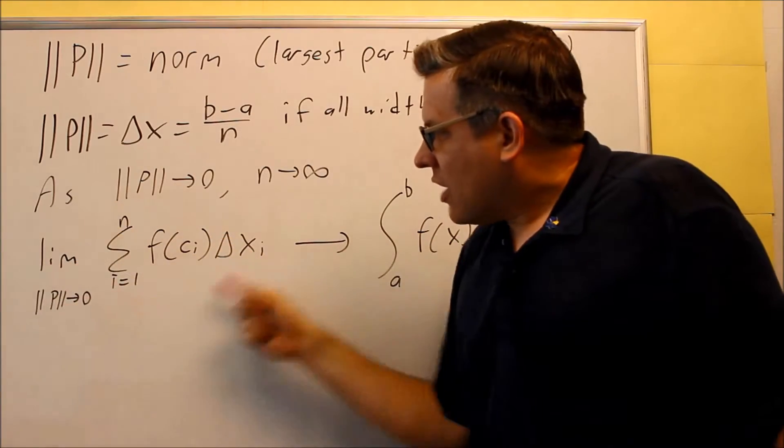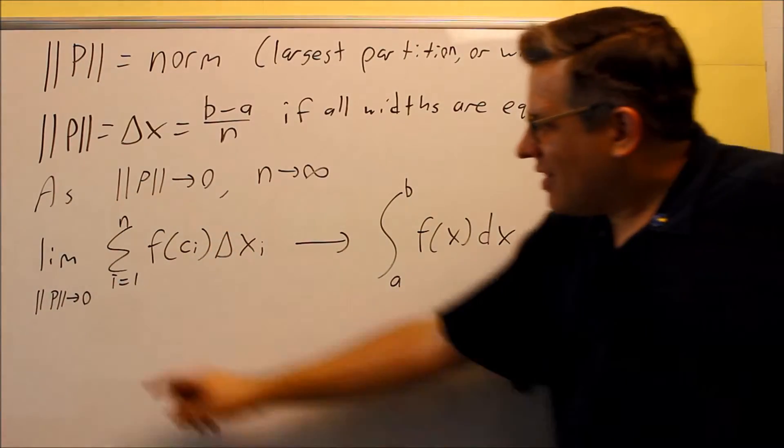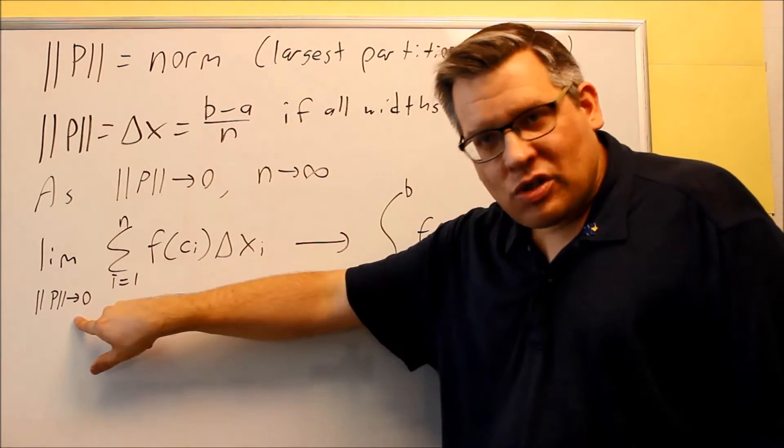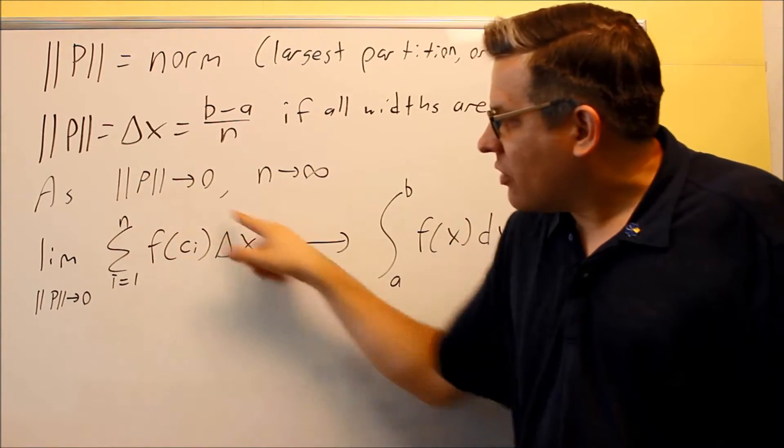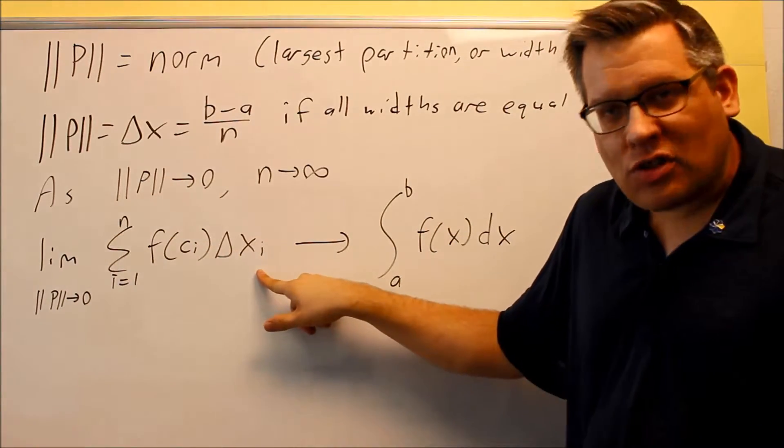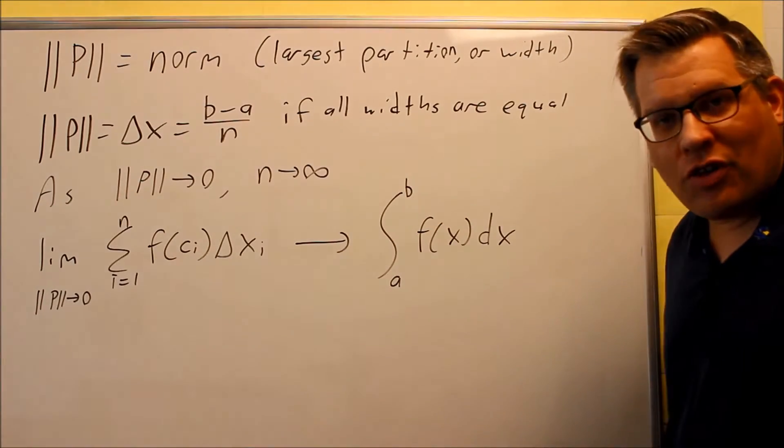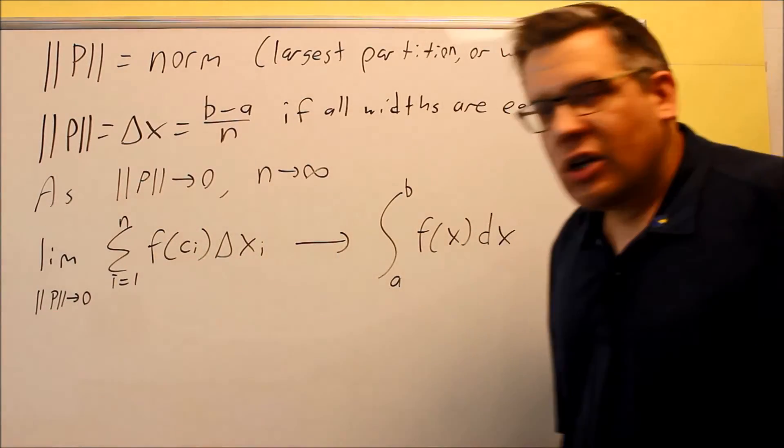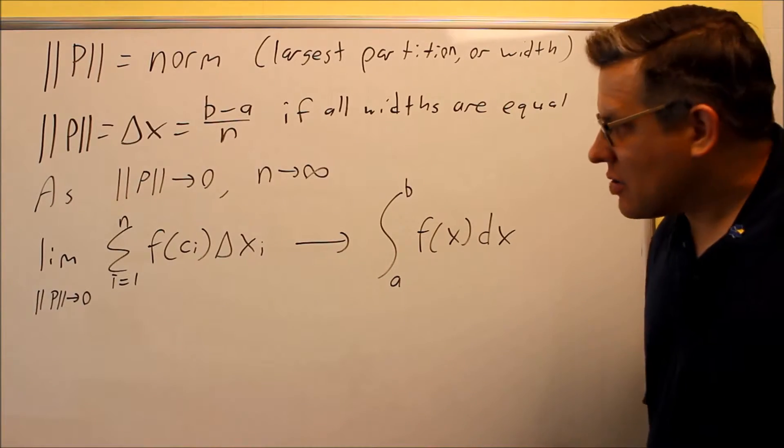So here's that notation using the norm. We can say that limit as the norm goes to zero. So this notation is exactly the same as what we've seen before in a previous section. The difference now is instead of having n go to infinity, instead we have the norm going to zero, which essentially means the same thing.